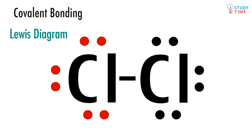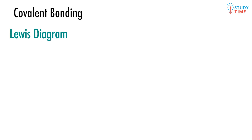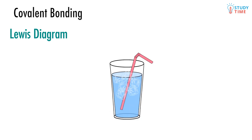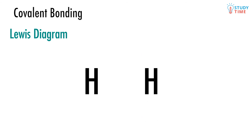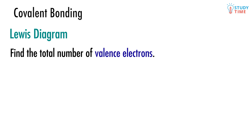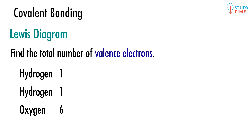Drawing Lewis structures for all those other compounds we talked about, or ones that you haven't even heard of before, is really simple. Let's go through this process with everyone's favourite compound, water. A water molecule consists of two hydrogen atoms and one oxygen atom. Find the total number of valence electrons. An atom of hydrogen has only one valence electron, and because there are two of them, the hydrogens are contributing two valence electrons. An atom of oxygen has six valence electrons, so this gives us a total of eight to work with.